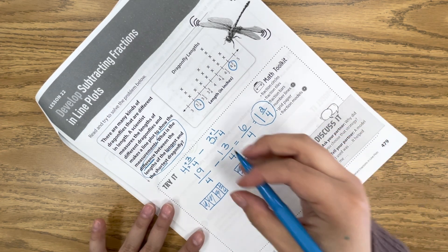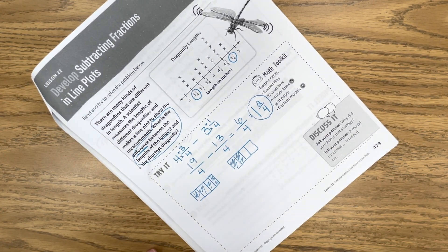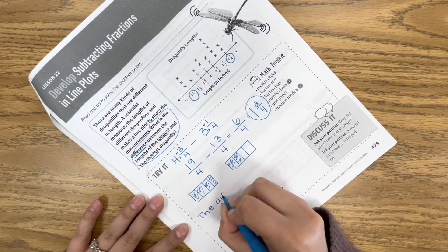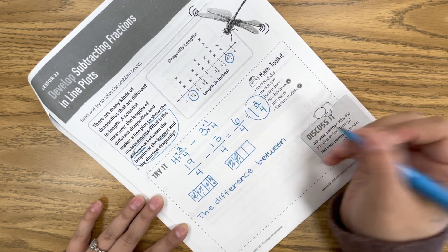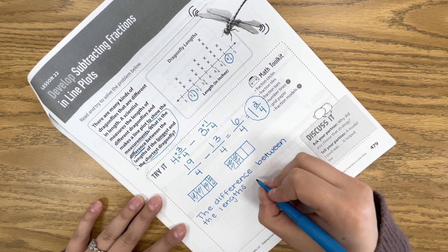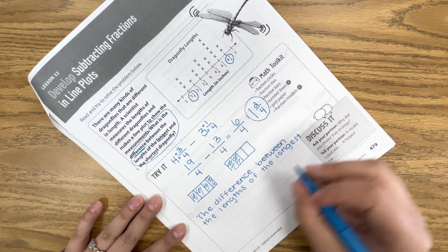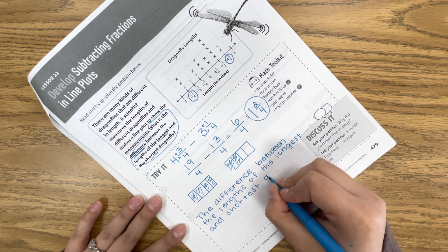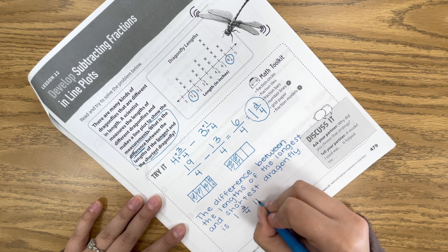So first let's write the answer and then I'll go over an example on this separate sheet of paper with you for a couple examples. So get ready to get some scratch paper. Our sentence to match our writing or our work here is the difference between the length of the longest and shortest dragonfly is one and two fourths inches.